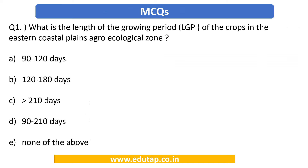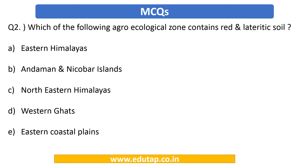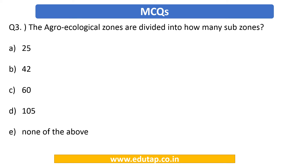Our first MCQ is about the length of growing period of crops in the eastern coastal plains — go through the options and try to answer it. The second question asks which agroecological zone contains red and lateritic soil. The third question asks into how many sub-zones agroecological zones are divided. Since we already covered AEZ and three ecosystems earlier, you should be able to answer these.